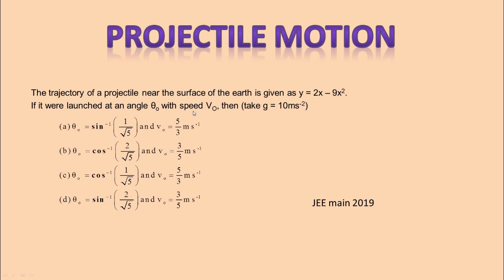Option A: θ₀ is equal to sine inverse of 1 by root 5 and v₀ is equal to 5 by 3 meter per second.